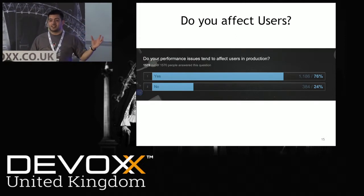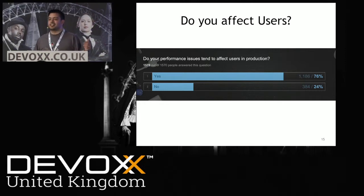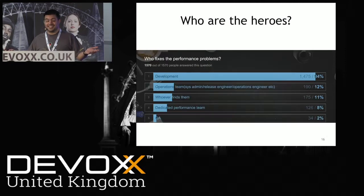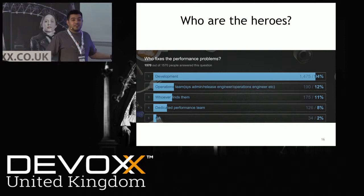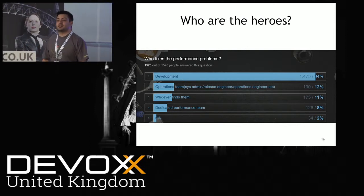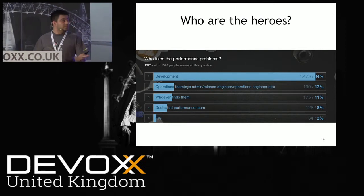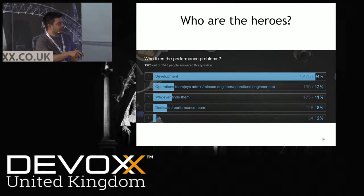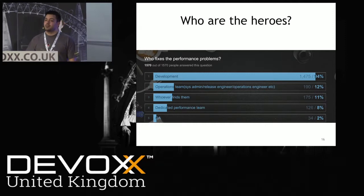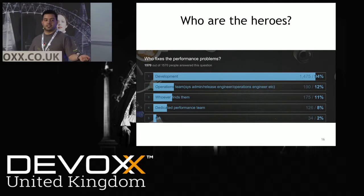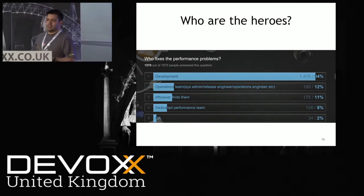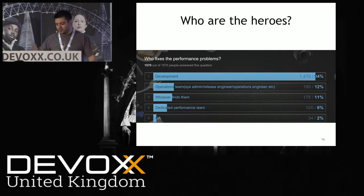Who are the heroes — who fixes performance bugs? It's developers. Irrespective of where it's found — testing in system test, integration test, in production — who fixes it? It's the developers, typically. This was a multiple choice question, but 94% of people who responded said developers are key to fixing performance issues. The problem is, a lot of the time we don't do our performance testing in development, yet it's our developers that fix it.